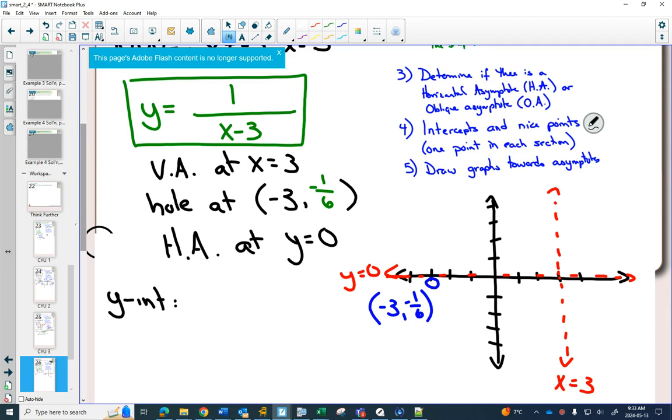Now, y-intercept is easy. Plug in 0 for x. Go to your new green equation. When I plug in 0 for x, I get 1 over negative 3. Then I'll write that negative 1/3 in green to remind you that we got it from our green equation. Even though if you would have plugged in 0 into the original equation, you would get the same thing.